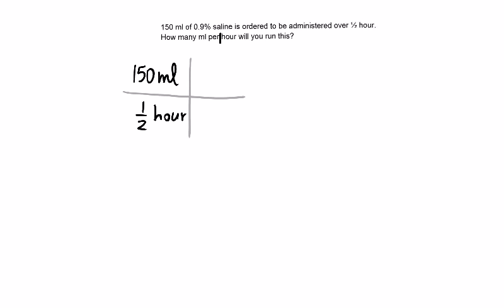Per hour means per each one hour, so I could put here one hour. So multiply the diagonal: 150 mils multiplied by one hour, divided by the third number which is the half an hour. So in the end, it will still be 300 mils per hour.